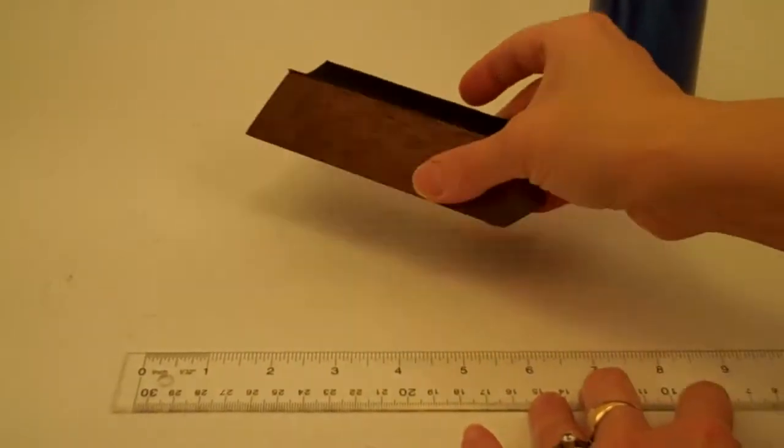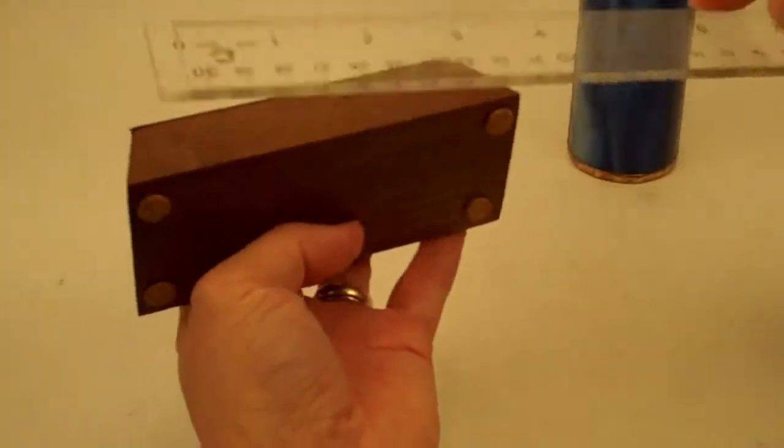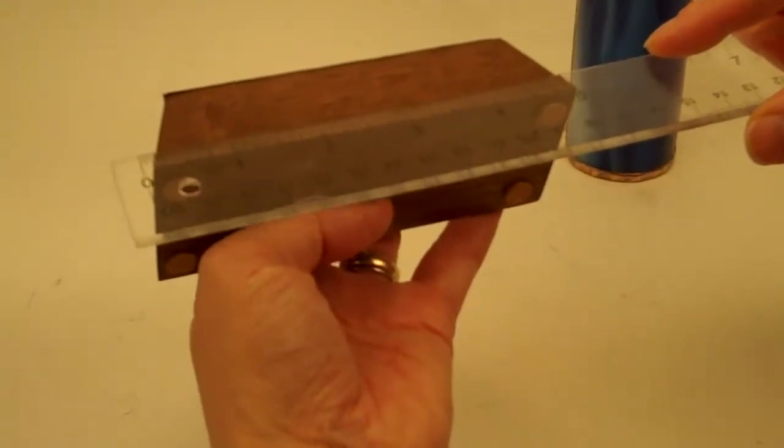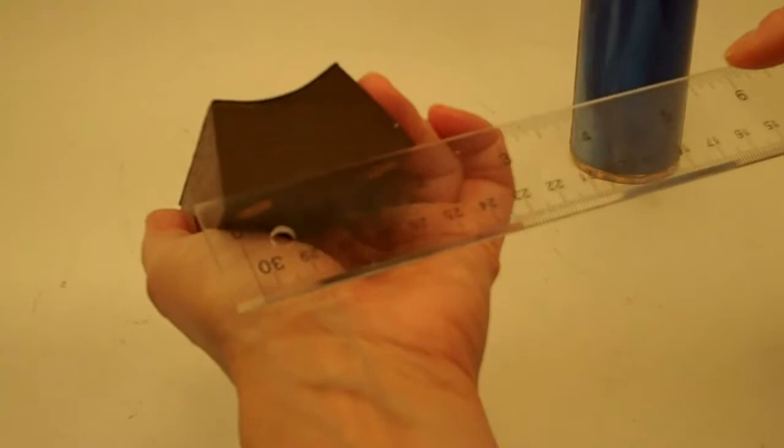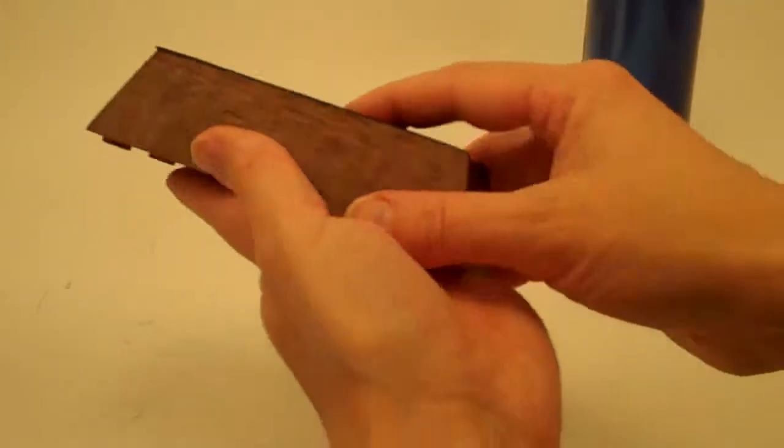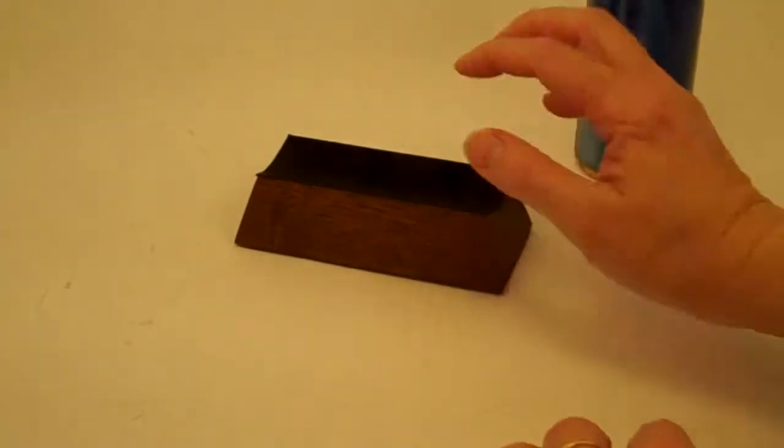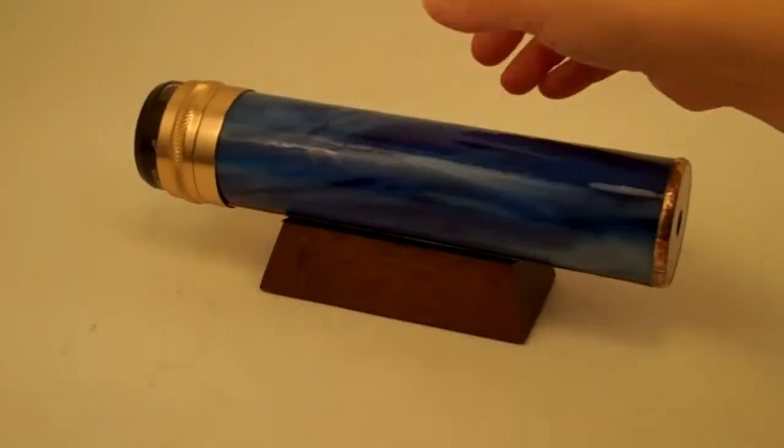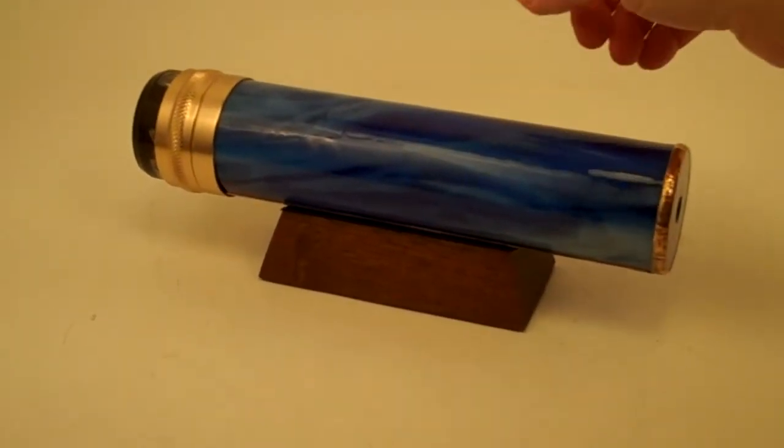They come with a solid walnut base that is about five inches in width and about two and a quarter inches in depth. It has a black suede lining and cork feet so it's a beautiful secure way to display your Mystic Rapture kaleidoscope.